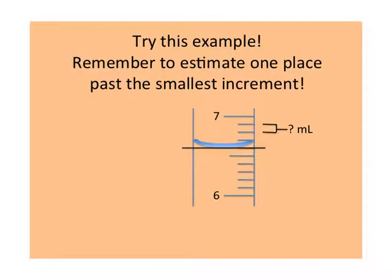So a good estimate would be fifteen point five milliliters. Try this example on your own — remember to estimate one place past the smallest increment that you can see. Please pause the video to give yourself time before I give you the answer.